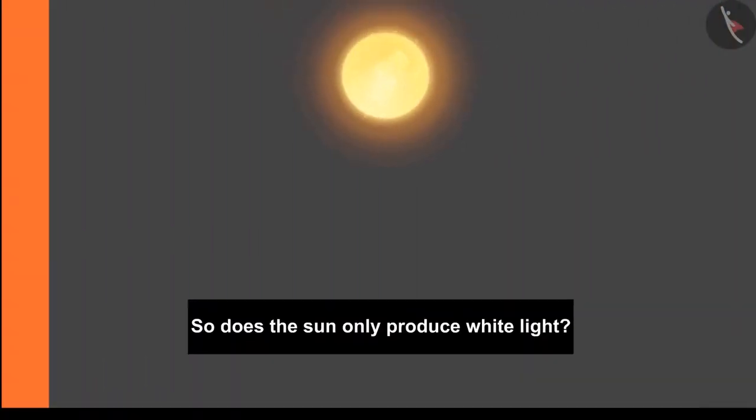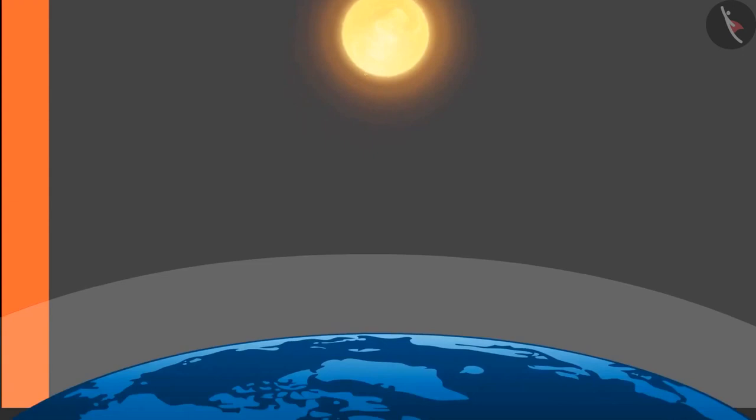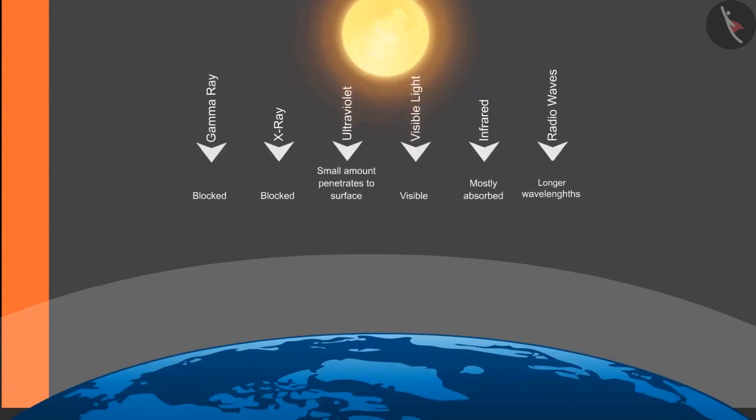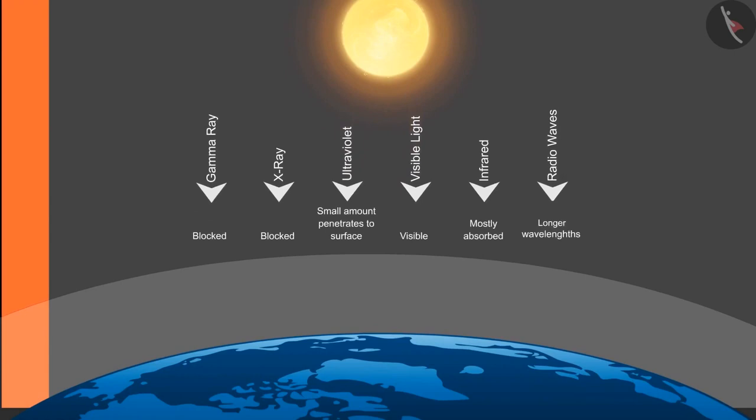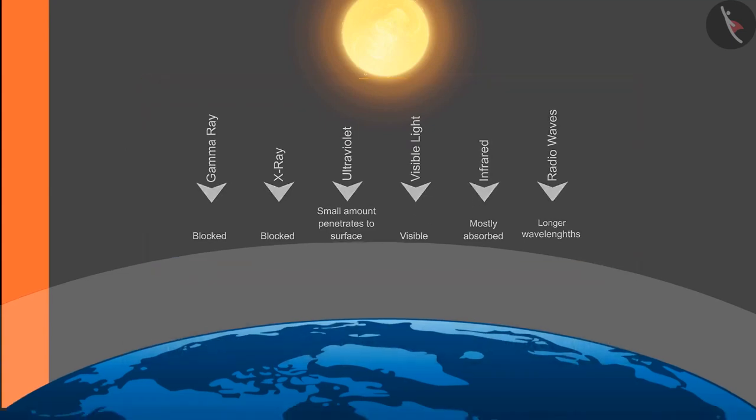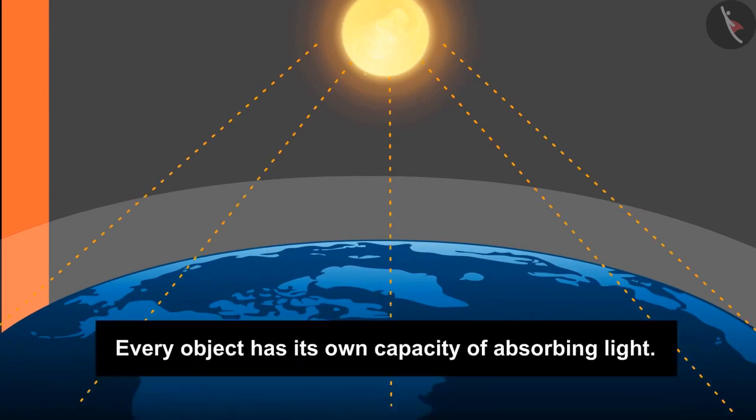So does the sun only produce white light, or is there anything else that we cannot see? Yes, electromagnetic waves produced by the sun, ranging from radio rays to gamma rays. Every beam has its own wavelength. Some of them get stopped in the atmosphere and some reach to the earth. We can only see the spectrum of white light by our naked eyes. We'll read about these waves in detail in higher classes. These rays fall on various objects in the world. Every object has its own capacity of absorbing light.